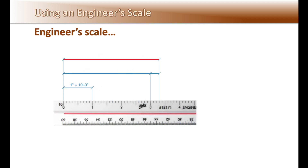Using the one-inch-equals-10-foot scale, measure the distance of the red line. Start by placing one end of the red line at the zero mark. Measure from the zero mark to the number three tick, which equals 30 feet. The line extends three tick marks past the three, and each tick mark equals one foot, making the total measurement 33 feet. A simple way to identify the number of feet is to add a zero to the numbers — giving you 10 feet, 20 feet, 30 feet, 40 feet, and so on. This applies to all engineer's scales.